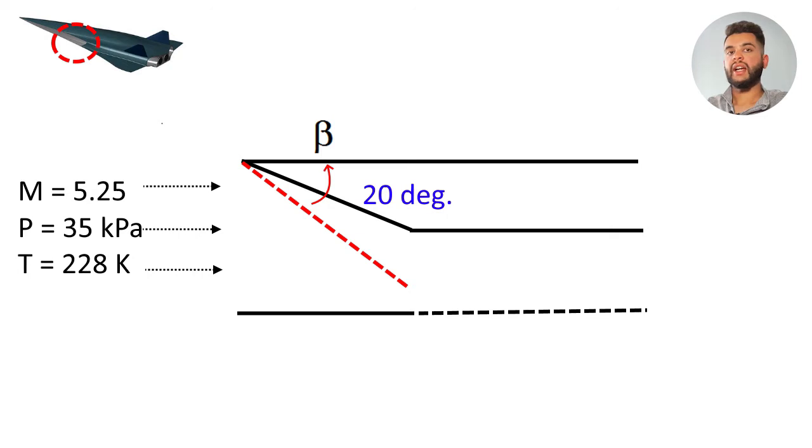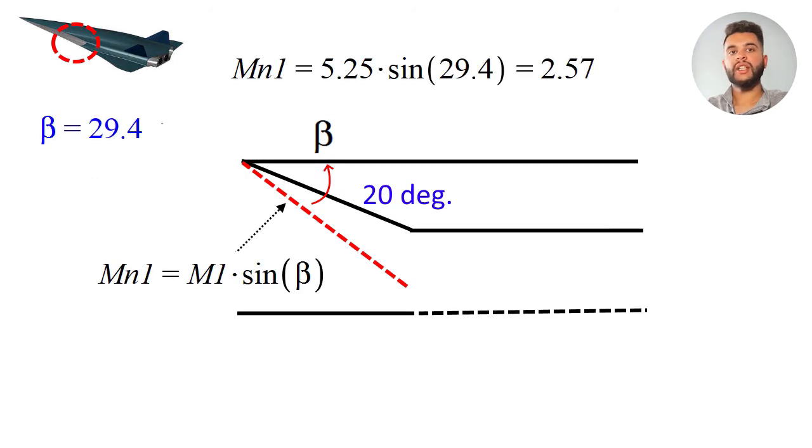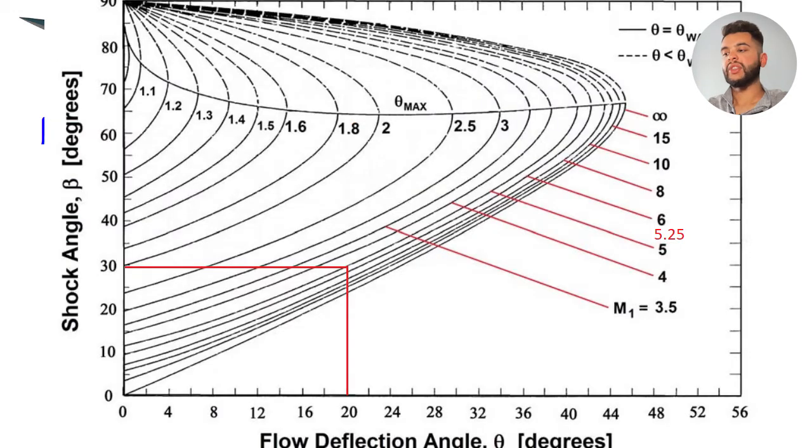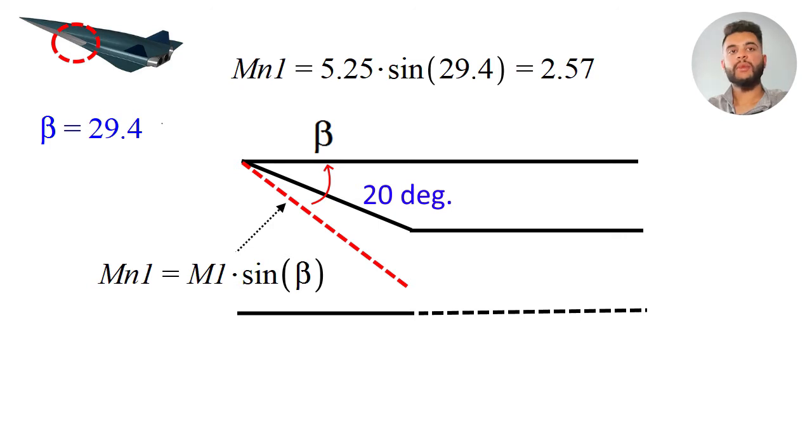We have beta equals the angle which we need to find of the shock. When we draw a diagram the first thing we can do is find the normal component of that incoming flow which equals m1 sine beta but we don't know what beta is right? Beta is simply the angle of the oblique shock and what you do is you simply go in the oblique shock charts and you look at where Mach number equals 5.25 and you have an angle of 20 degrees. Based on that you can get the angle of about 29.4.